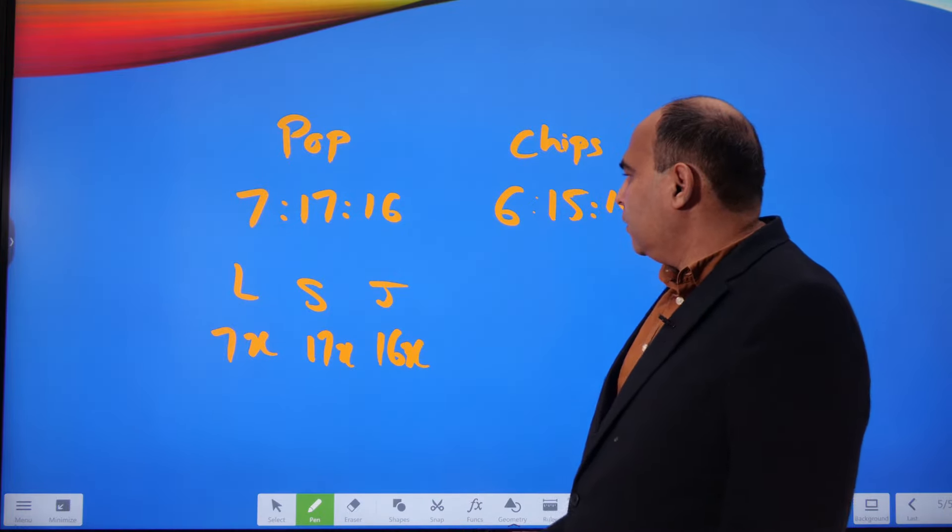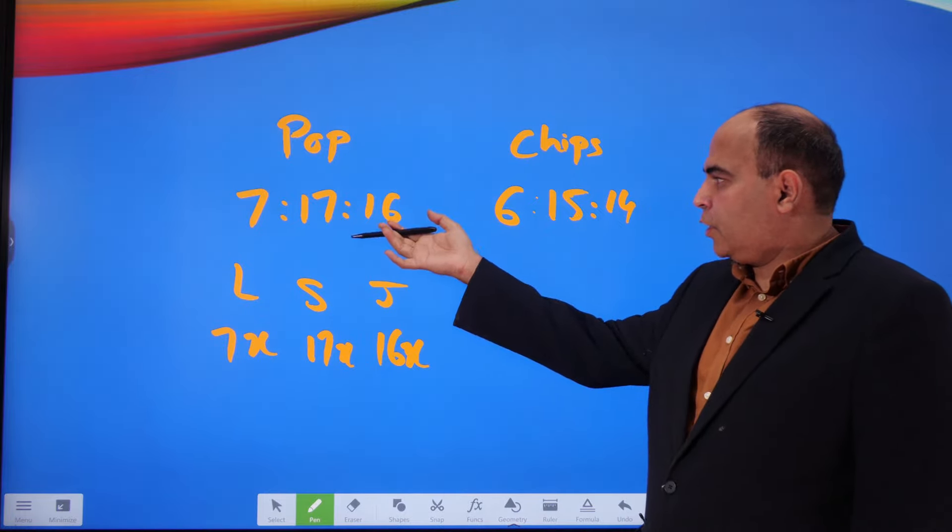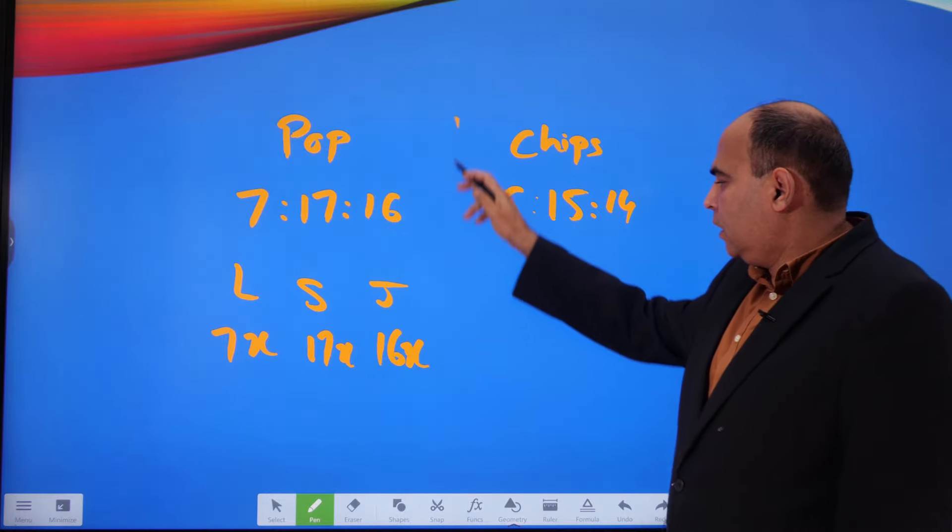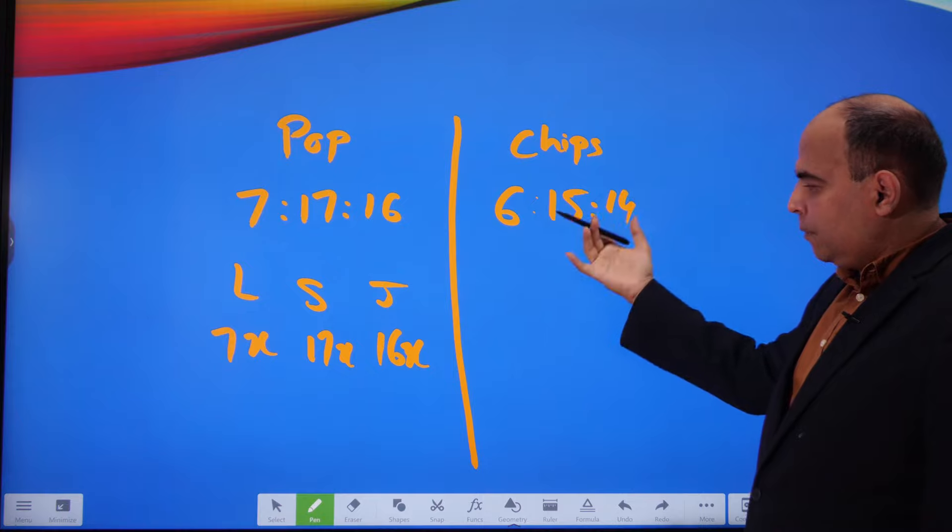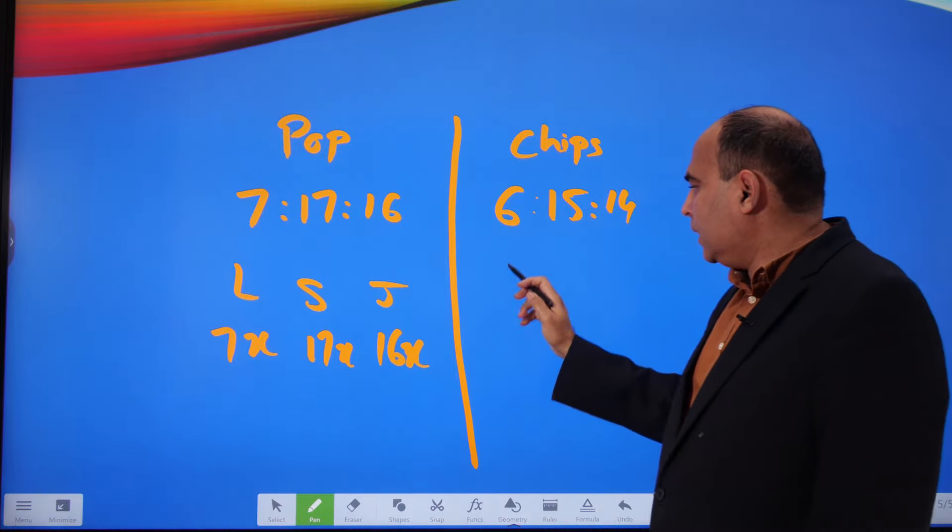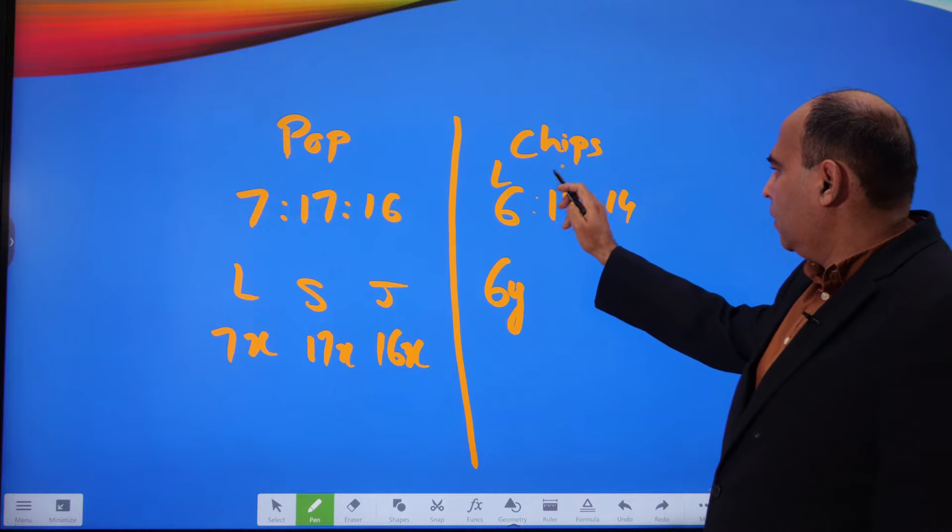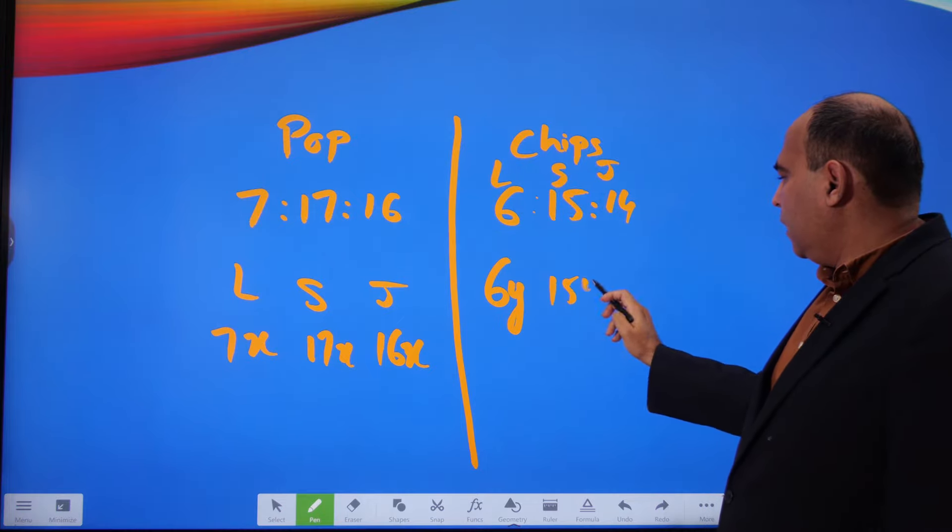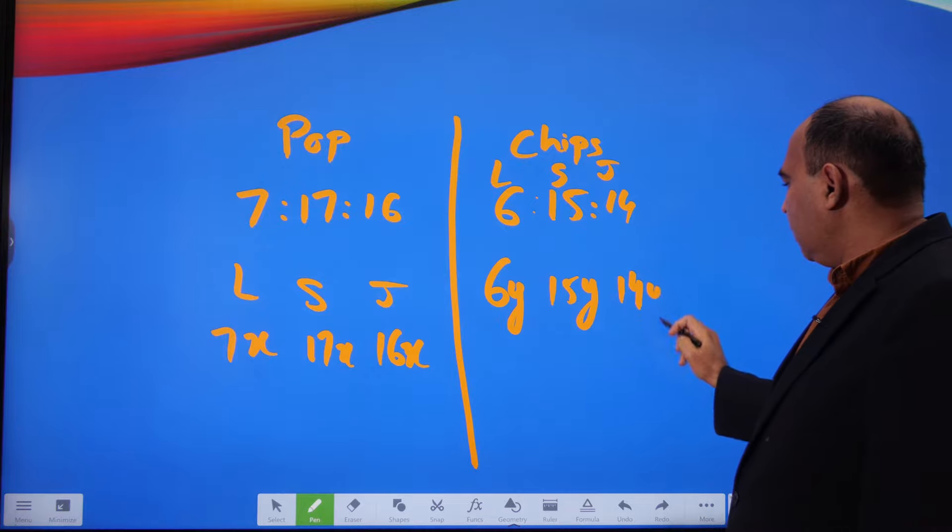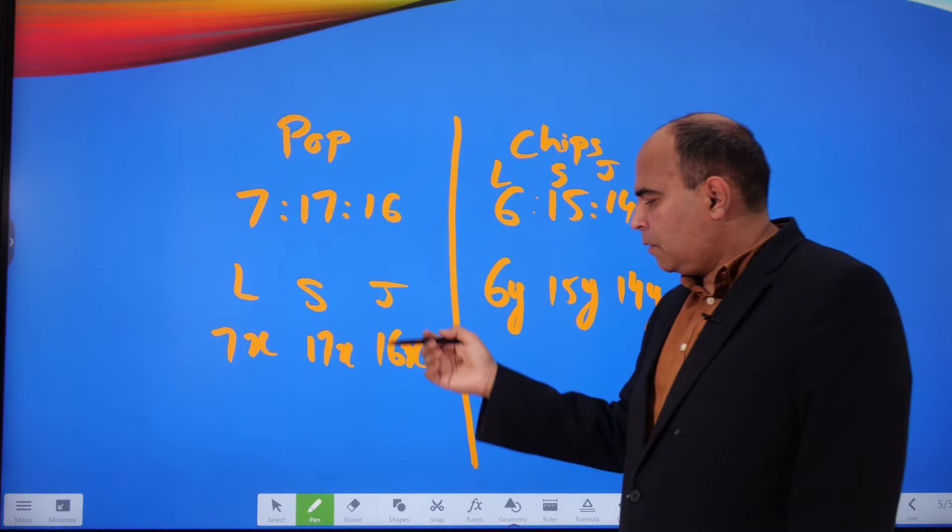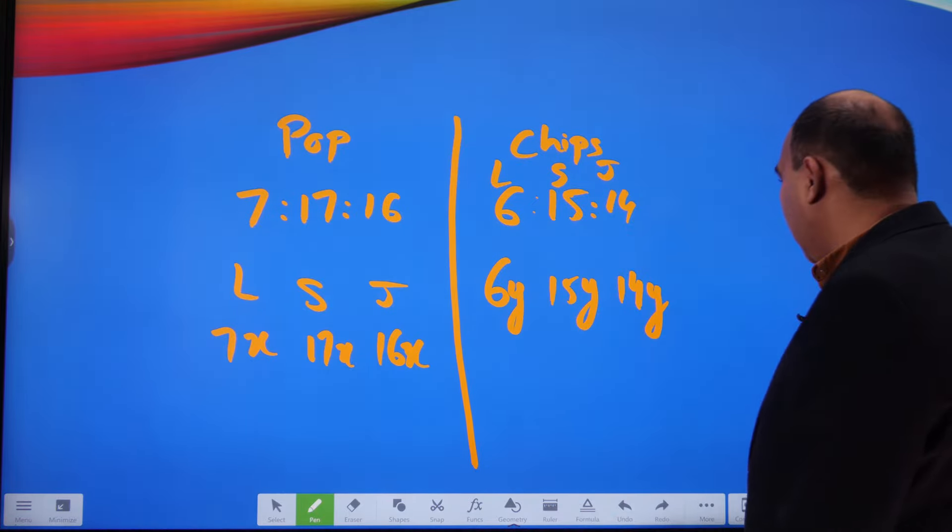And the chips packets, if I use a multiplier y, would be 6y, 15y, and 14y respectively. These would be the chips packets; this will be the popcorn packets.